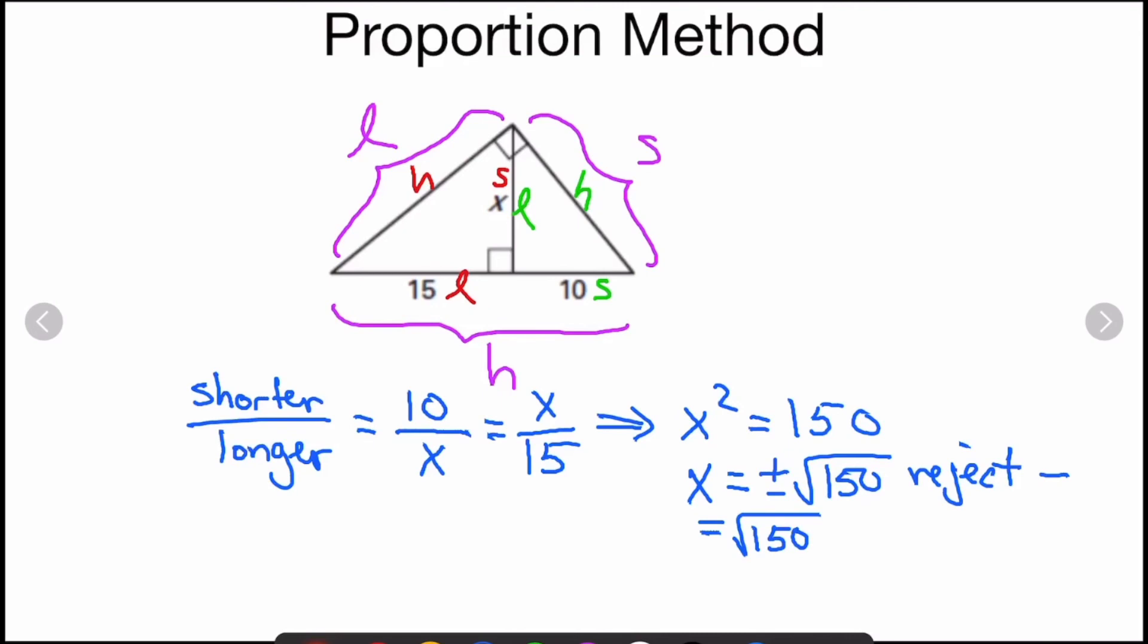And I can reduce this radical. 150 is really 25 times 6, which is 5 square root 6. So that will be the value of my X.